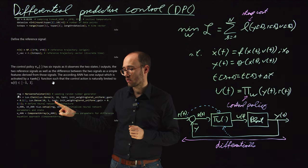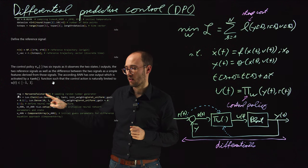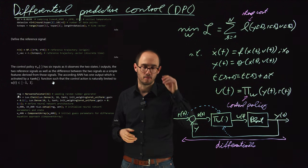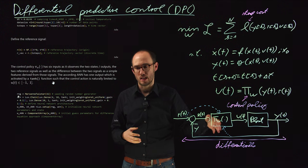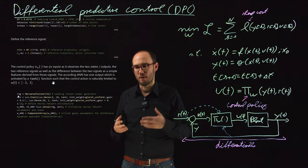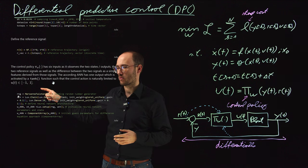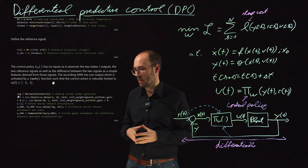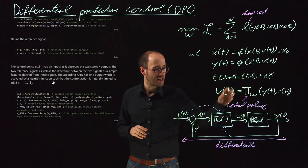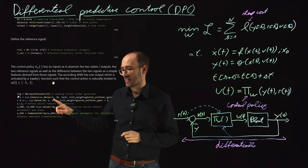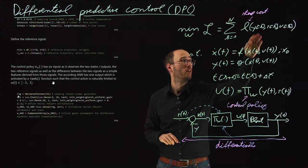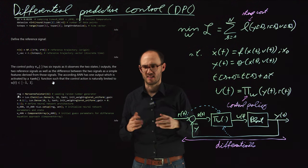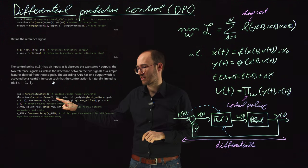The tanh activation is a smart choice because it automatically limits the control action to between minus one and one, modeling the fact that real-world actuators have limited input capabilities. Our control policy has six inputs: the two states (y), two references, and the two control errors — since we have two signals, we also have two control errors as additional input features, giving input dimension six.